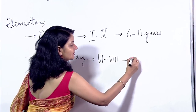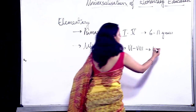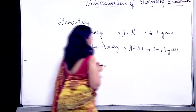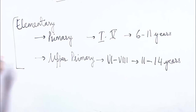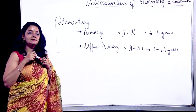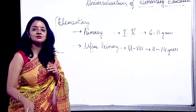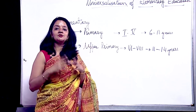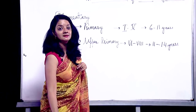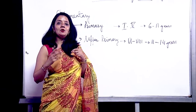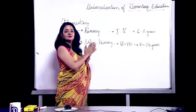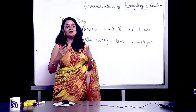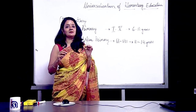The age group for upper primary is eleven to fourteen years. This is the elementary level, and we are working on the universalization of this elementary level — how we can spread elementary education across India. The meaning of universalization of elementary education means availability of education everywhere according to the specific need of the child and place.